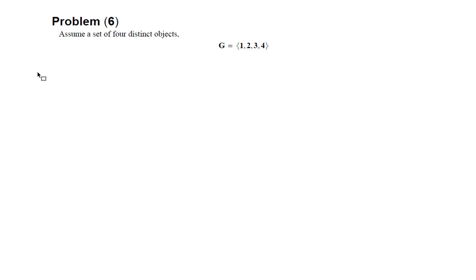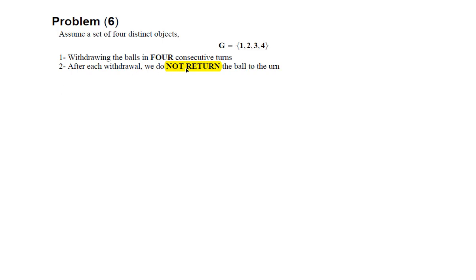We have a set of four distinct objects. These objects are numbered from one to four. We are going to withdraw using the following rules: first, we are withdrawing these objects in four consecutive turns; second, we are not returning any object after each withdrawal; and third, we are going to write down the number of these withdrawn objects in order.